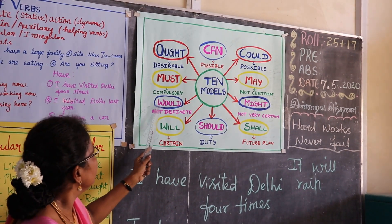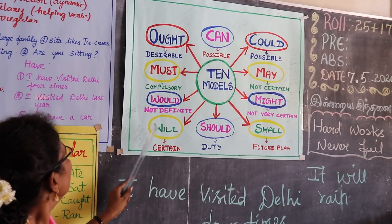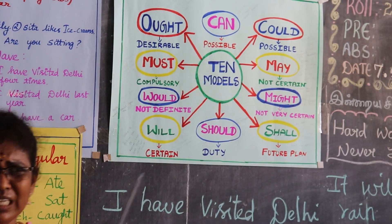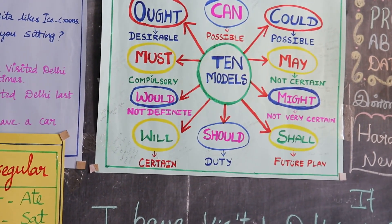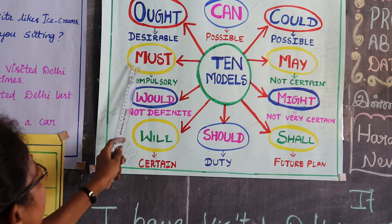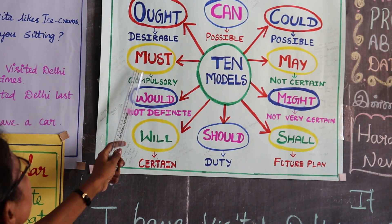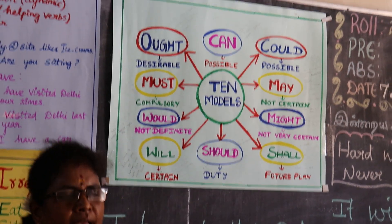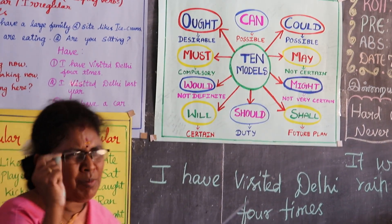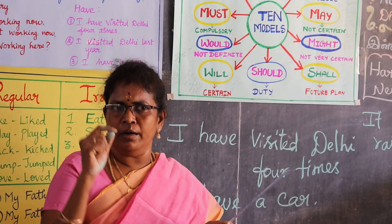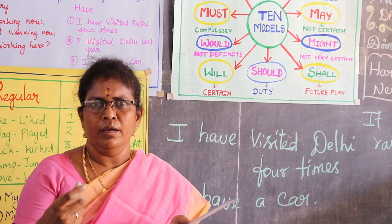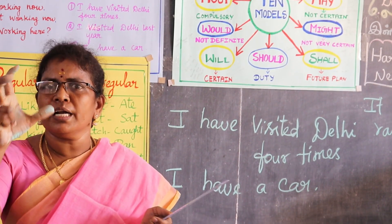Would is the past form of will and is used for polite requests. Example: 'Would you lend me your camera?' Must expresses compulsion. Example: 'You must read newspapers daily, because if you do not, you lose your vocabulary.' So must means compulsory.